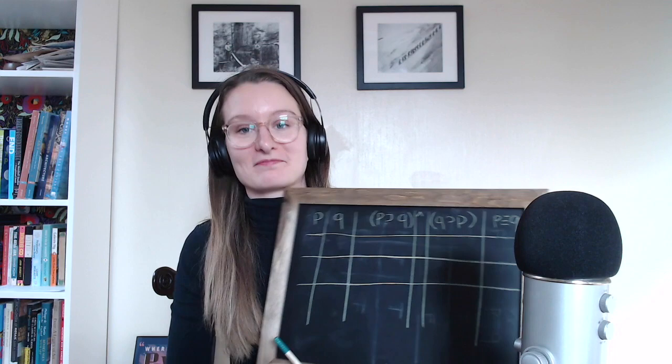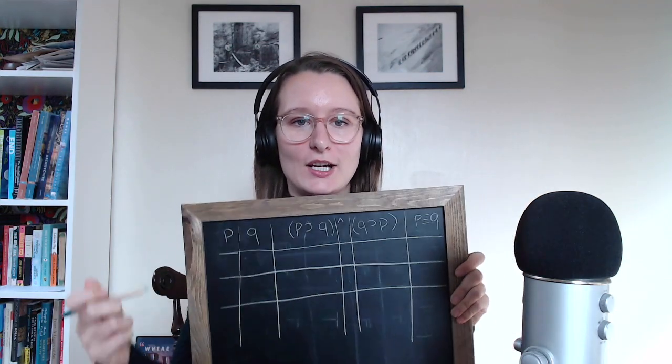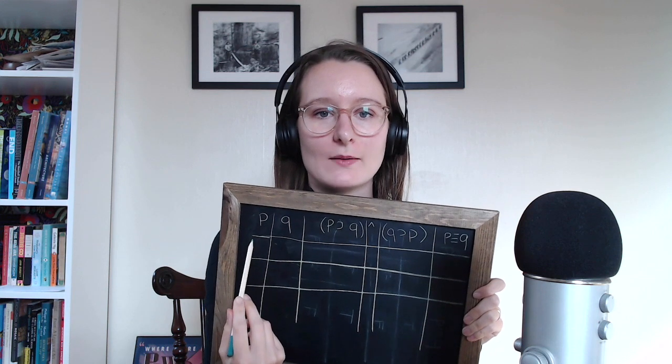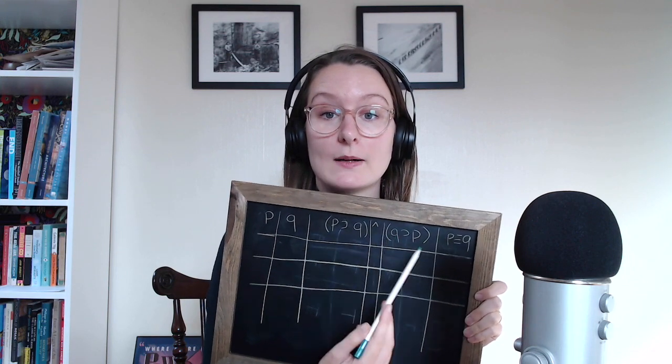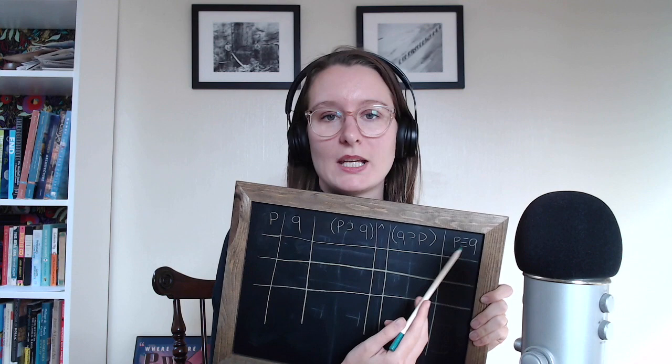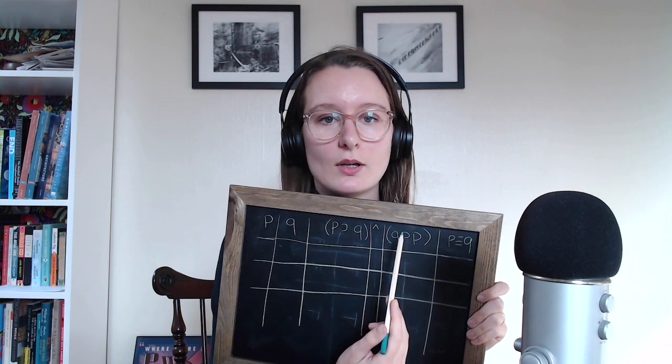I already wore down my yellow pencil. Okay, biconditional, here we come. So what we've got here is the truth values for P, Q, if P then Q, if Q then P, and P biconditional Q. So we're going to start out just writing out our truth values for P and Q, and then we are going to apply them to the two complex statements inside the biconditional, and then we're going to evaluate both sides of that together. You'll see — it'll be fun.